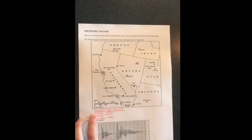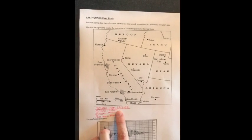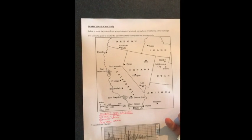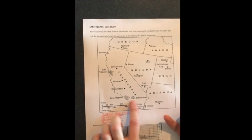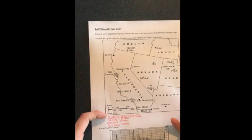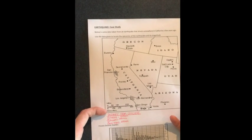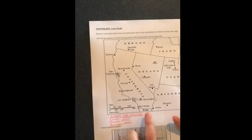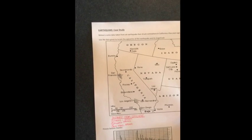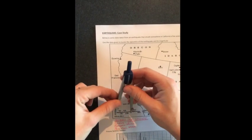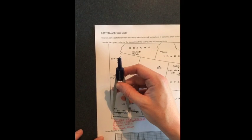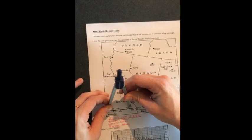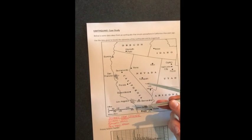Let's do the Fresno seismic station first. The distance is 350 kilometres. We need to use a scale to determine our radius. The scale has two sides — miles and kilometres. We have used kilometres in this example so we will be using the kilometres side of the scale. I'll put one point of the compass on zero and take the other point to 350. That will be the radius of my circle.